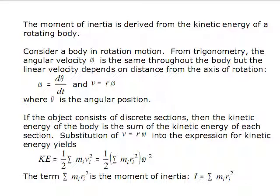So the moment of inertia is derived from the kinetic energy of a rotating body. We have a body in rotational motion, and from trig and what we just discussed, angular velocity omega is the same throughout the body, but the linear velocity depends on distance from the axis of rotation.